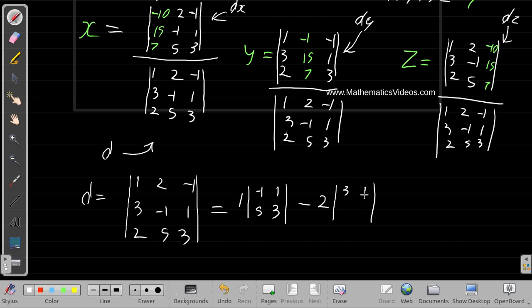Then plus negative one times - now when you cover up the row and column with the negative one, you have |3 -1; 2 5| uncovered.